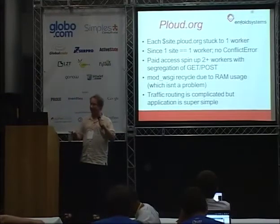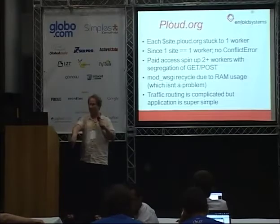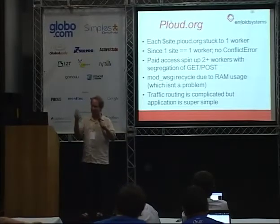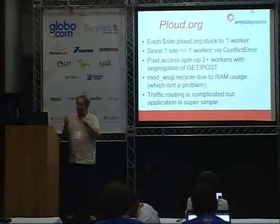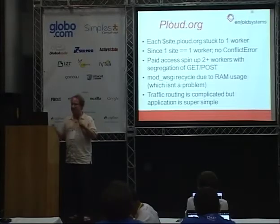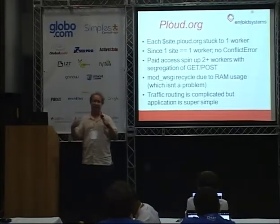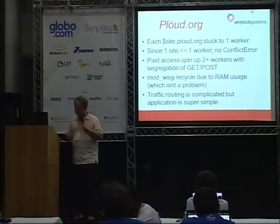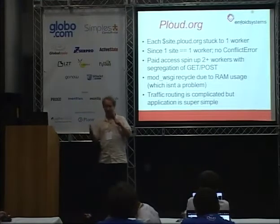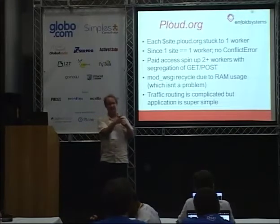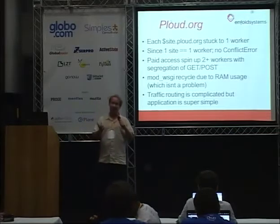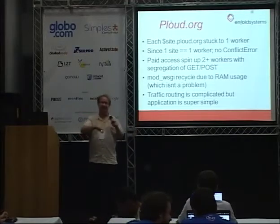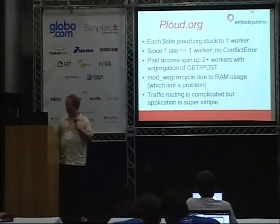On plone.org, each site — like sitename.plone.org — is stuck to a worker. Since we only have one site and one worker, you just don't get conflict errors. If you're paying money, we spin up multiple workers and segregate GETs and POSTs. ModWhiskey has a very nice feature: it recycles based on RAM utilization, brings up another site, and does really nice things to prevent service interruption. Now our traffic segregation routing problem is actually kind of complicated, but our actual entire infrastructure is very simple. As long as you only have one thing that's fairly complicated to deal with, it's much better than making complexity all over the place — that's a very important idea in scaling anything.